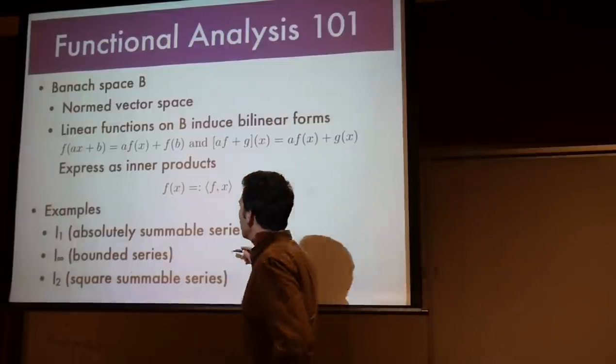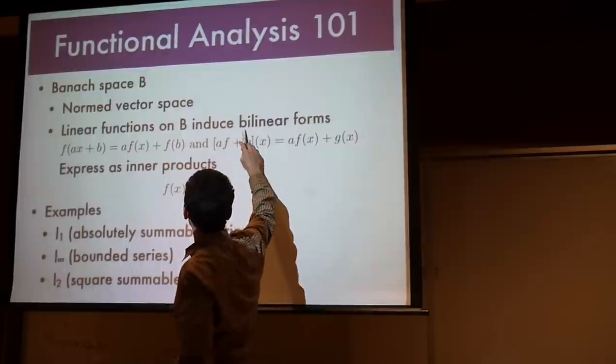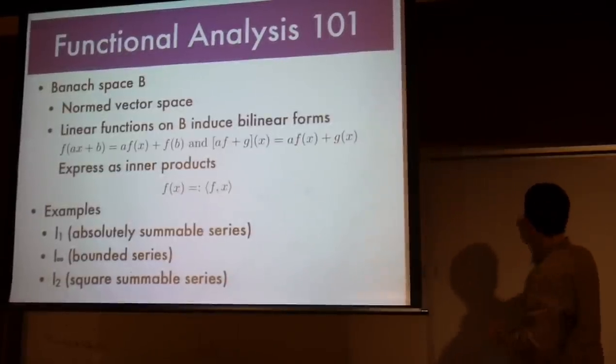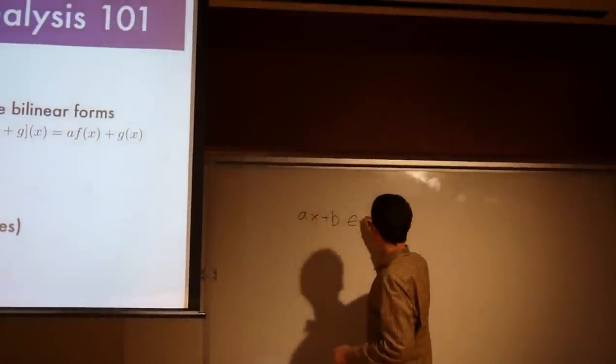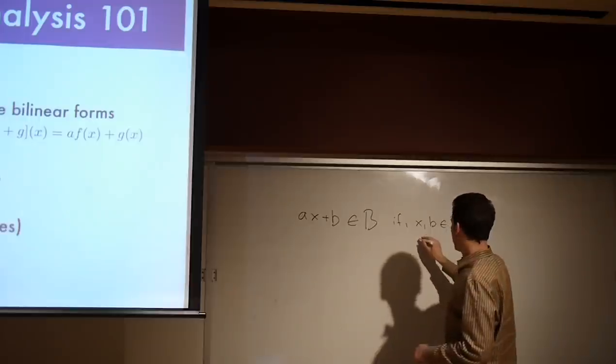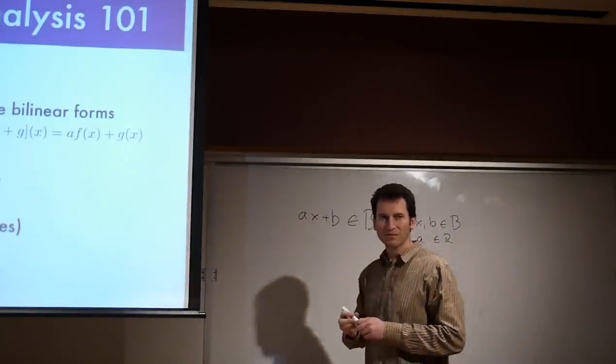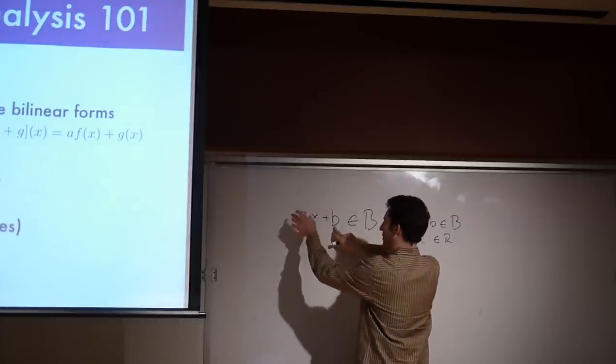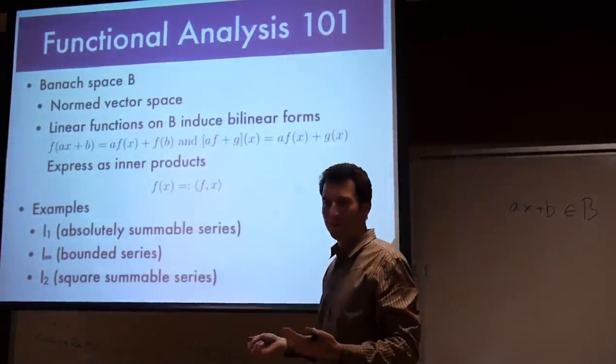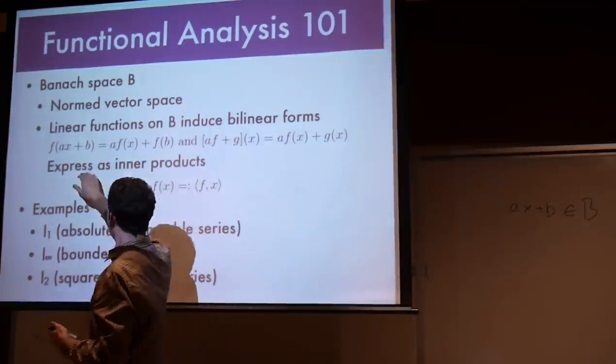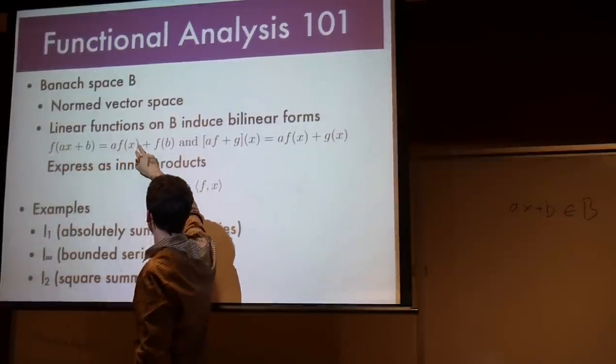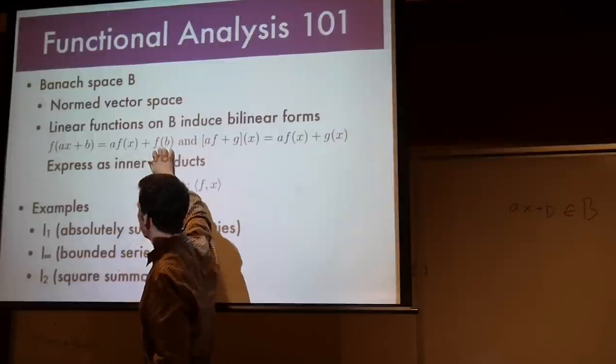Linear functions on these objects induce bilinear forms. The vector space simply means that AX plus B is still in the space if X and B are in that space, and A is some scalar. So basically it means I can take sums, I can multiply and I stay in space. I can therefore define a linear function on any arbitrary objects. A linear function on objects in their Banach space needs to be linear in the arguments, so I can pull the multiplication addition out. So again, A times F of X plus F of B.